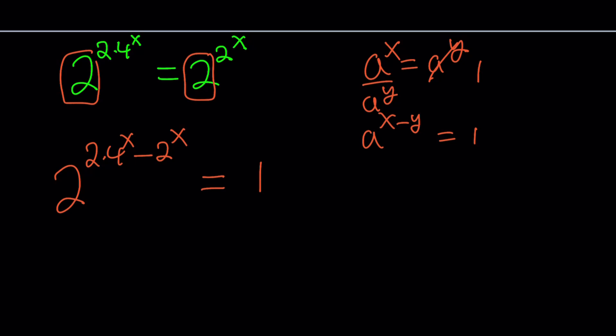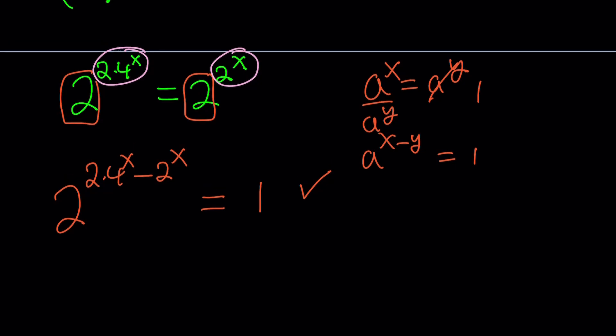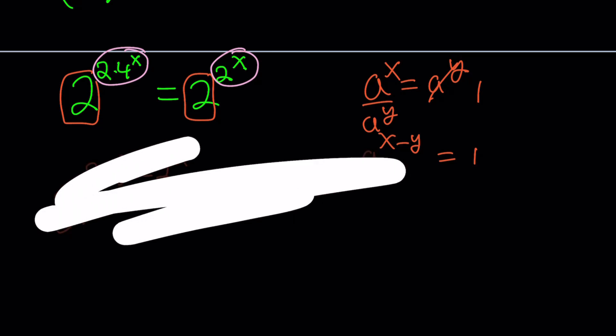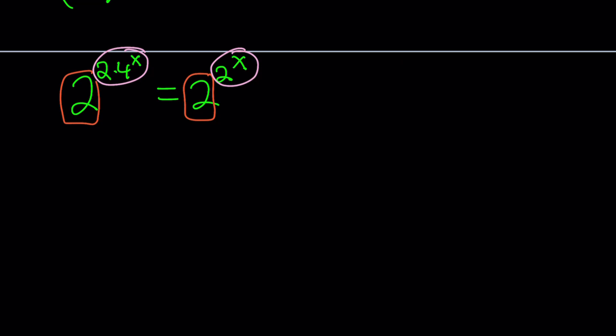Since our bases are not variables or they're not 1 or negative 1, you don't have to go with this. You can just directly set the exponents equal to each other. So let's use this approach for the real solutions, and then we're going to look at what we can do for the complex solutions.